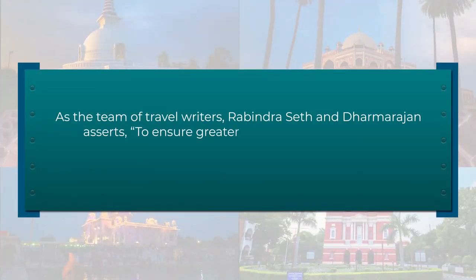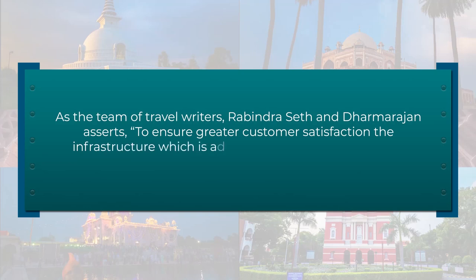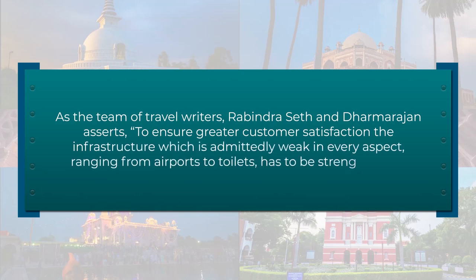Since government policy is determined by the critique of its policies by the travel trade, as travel writers assert, to ensure great customer satisfaction the infrastructure — which is admittedly weak in every aspect ranging from airports to toilets — has to be strengthened. India has been known for its traditional hospitality and personalized services based on its colonial tradition and large labor force, however what the tourist wants is efficiency and time-saving which only technology can give. The argument is therefore on how to retain the USP — the unique sales proposition — and yet modernize India's tourist product.